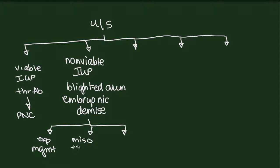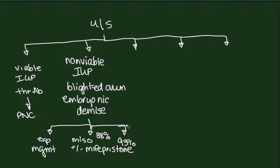The second option is medical management with misoprostol plus or minus mifepristone. If you use misoprostol alone, that gives about an 88% success rate. If you add mifepristone to misoprostol, that gives about a 93% success rate. The final option is suction D&C, which is about 98% successful at removing all products of conception, though a few patients may have retained products and need another intervention.